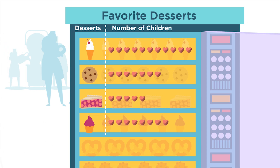Which dessert do the people like the least? This time, look for the row with the least number of hearts. Since the pie row has the fewest hearts, you know that it was the least favored by the people who were surveyed.